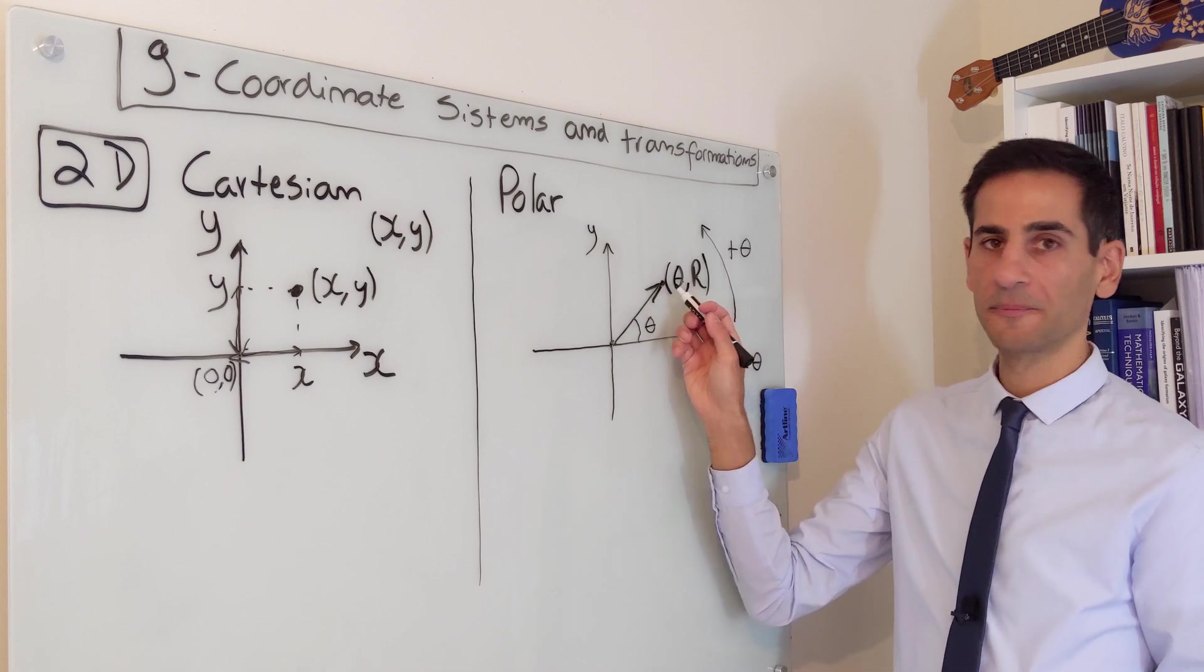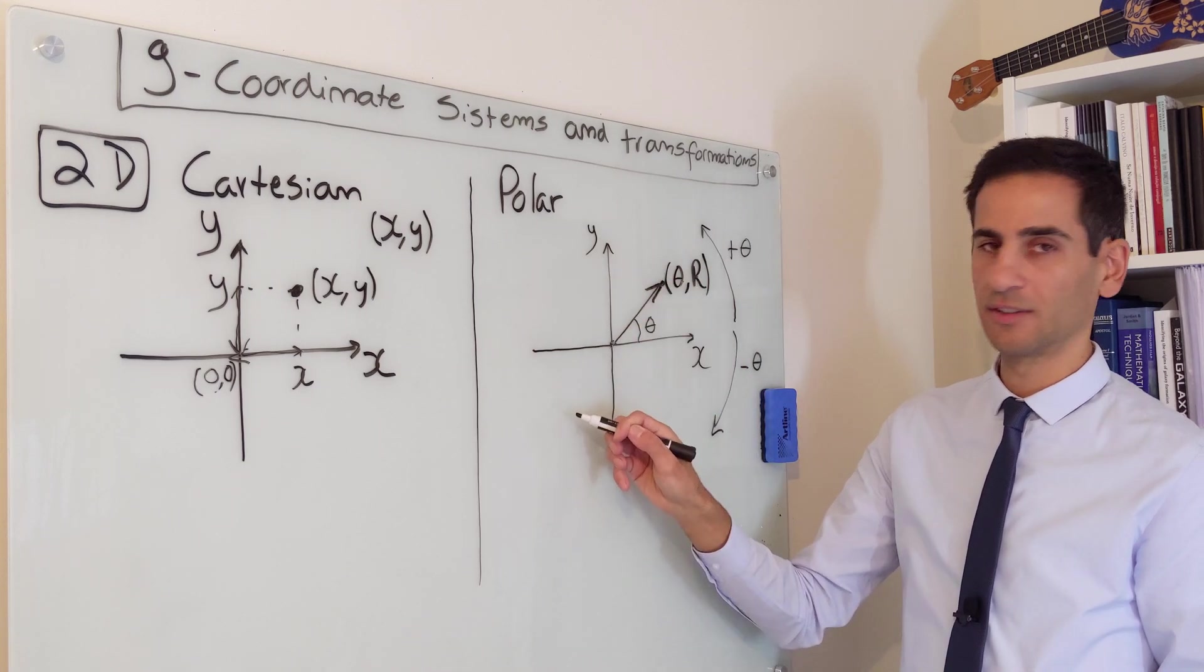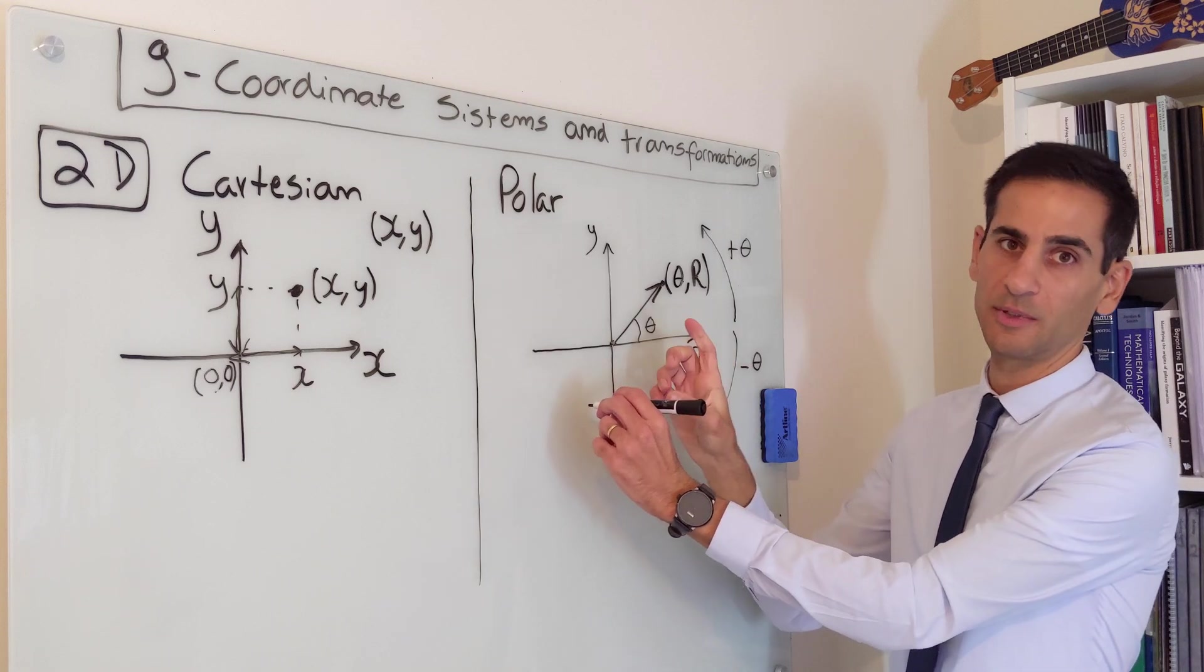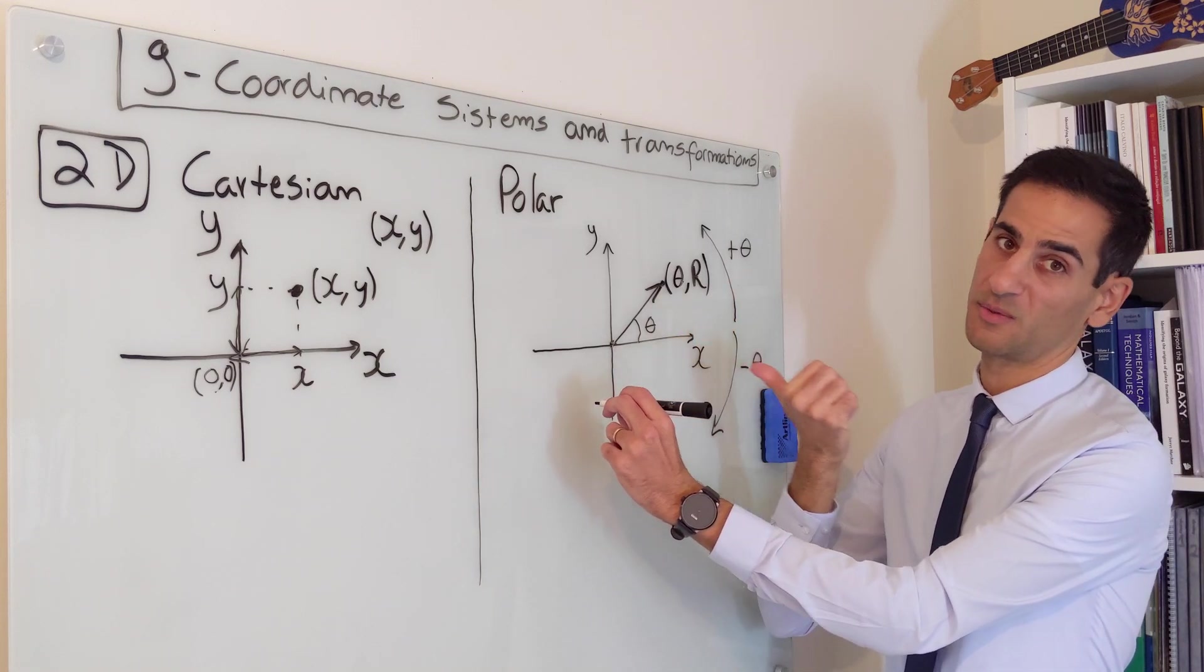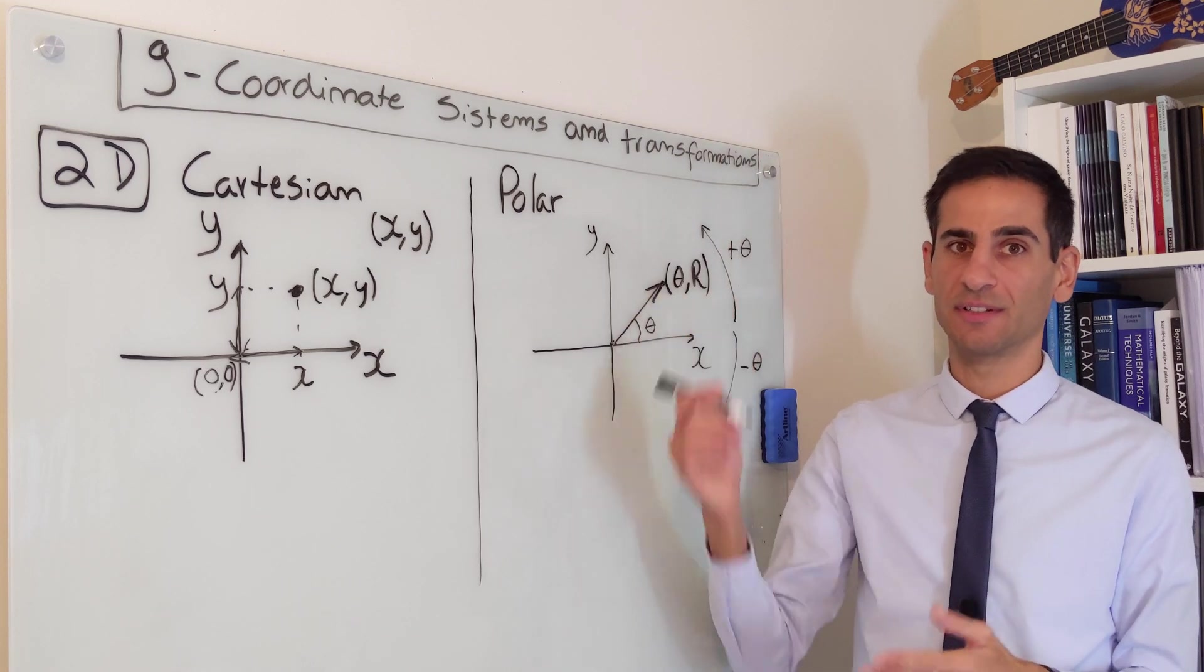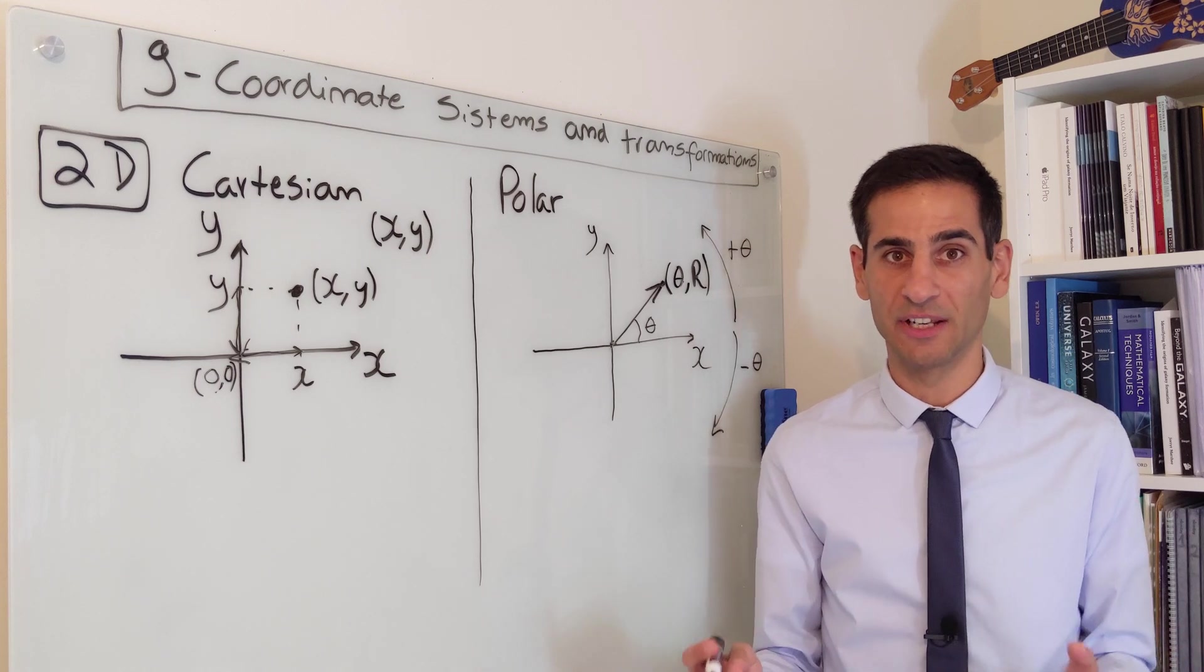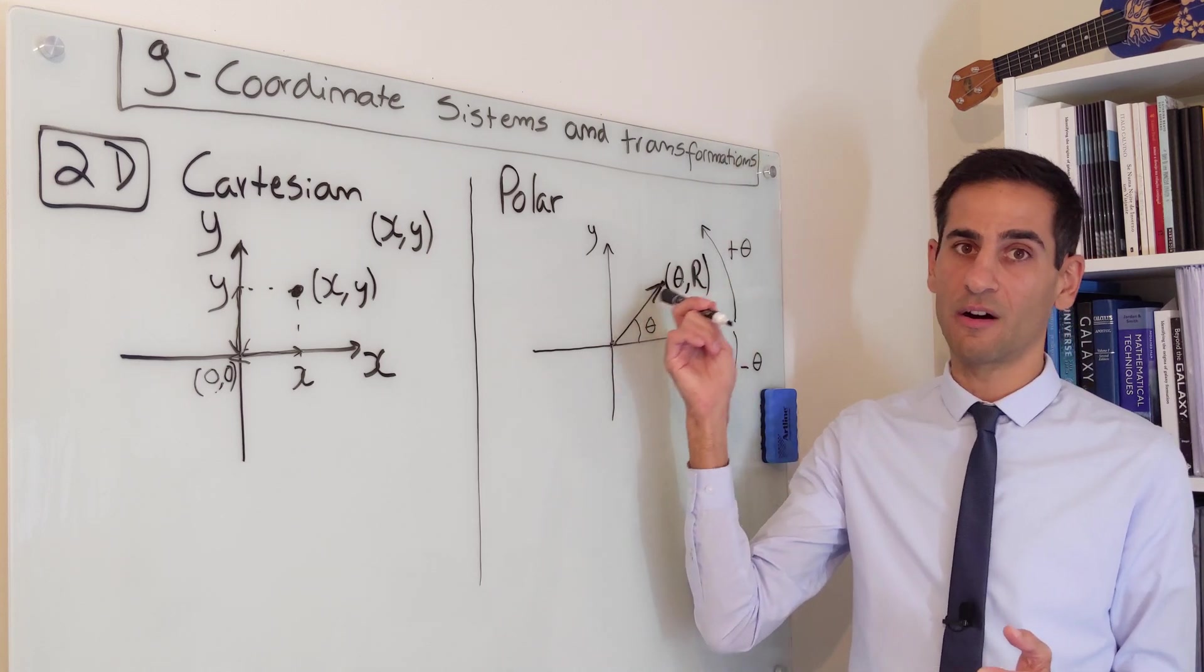By adding 2π. Or you can add π, you go to the other side, and then you multiply r by minus 1. What does this imply? It implies that in polar coordinates, a point can be given with literally an infinite number of combinations of theta and r.